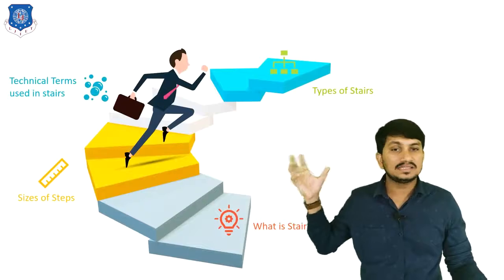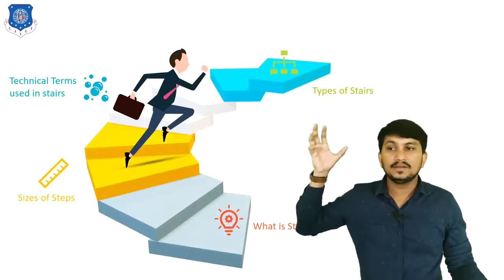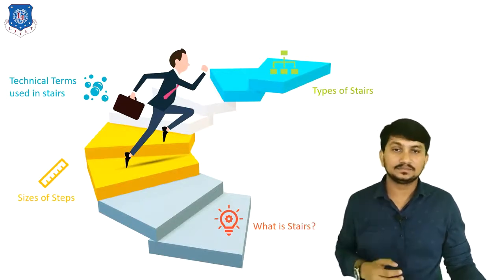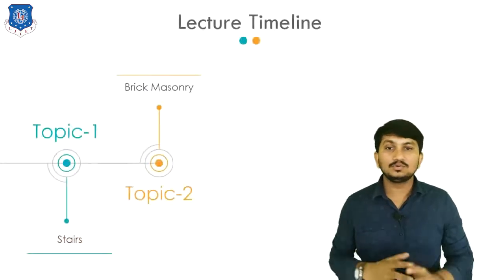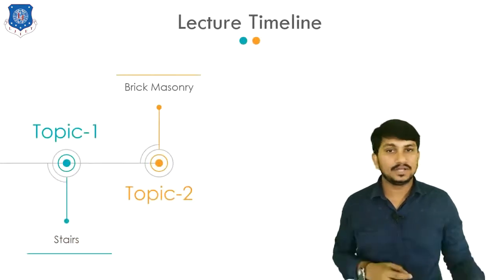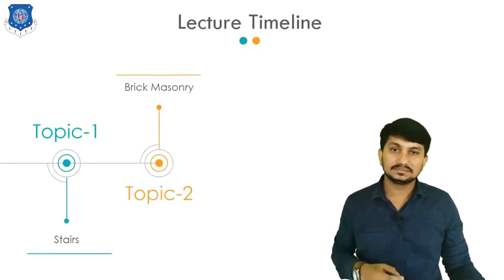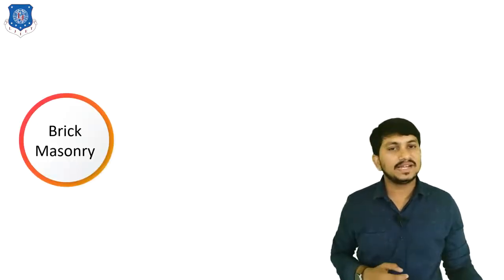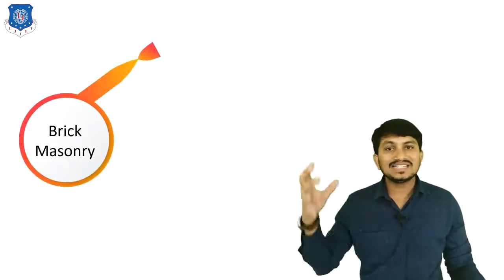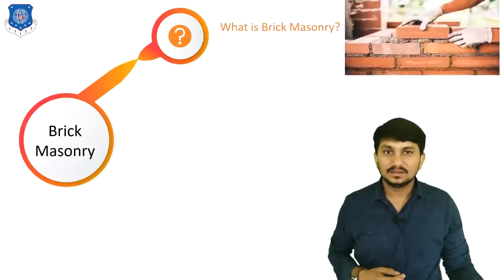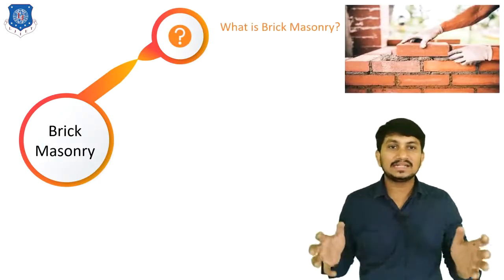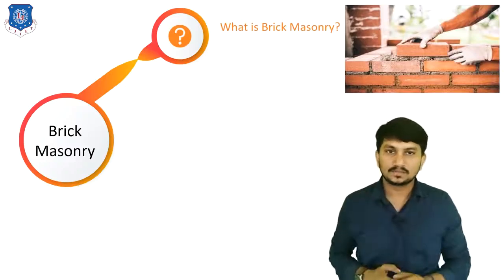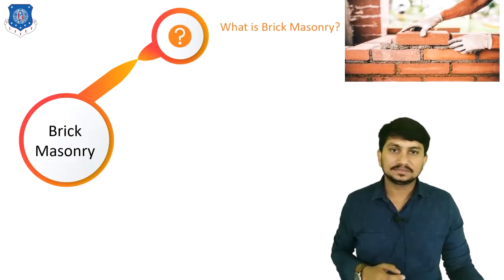In summary, we have discussed what is a stair, sizing of stairs, technical terms used in stairs, and types of stairs. Now let's move to our second topic, which is brick masonry. In brick masonry, the first question is: what is brick masonry? It is the laying of bricks bonded together with mortar in a number of layers — this is called brick masonry.